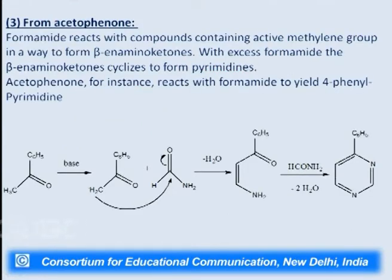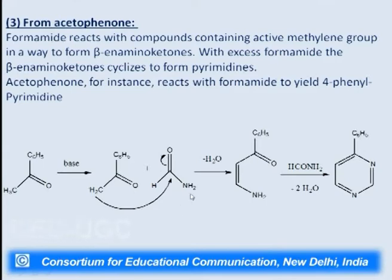Pyrimidine can also be prepared from acetophenone. Formamide reacts with compounds containing active methylene groups to form beta-iminoketones; with excess formamide the beta-iminoketones cyclize to give pyrimidine. Acetophenone will react with formamide — water goes out as a side product — and it will rearrange to give a cyclized product which is 4-phenylpyrimidine.